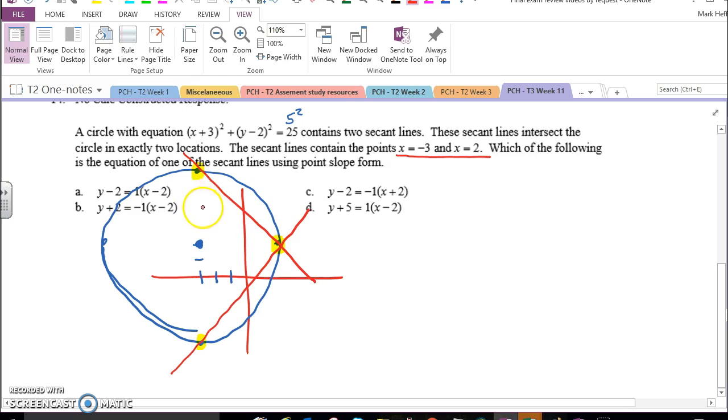This is a circle, so the radius is 5, so we're going down 5, over 5, so the slope is either negative 1 or 1, depending on the one you want, and each line goes through the coordinate over 2, up 2.